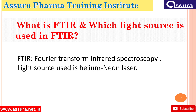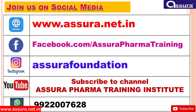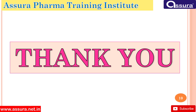Next, what is FTIR and which light source is used in FTIR? FTIR stands for Fourier Transform Infrared Spectroscopy, and the light source usually used is a helium-neon laser. Hope you liked this video. For more videos and notifications, join us on Facebook, Instagram, Twitter, and WhatsApp. Thank you for watching.